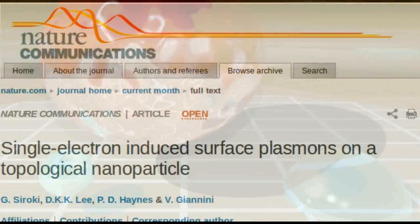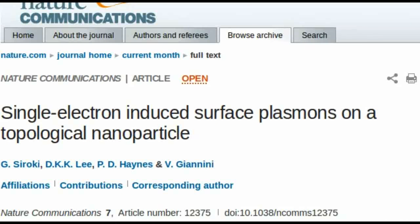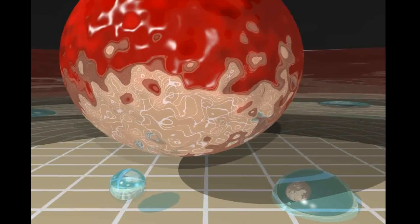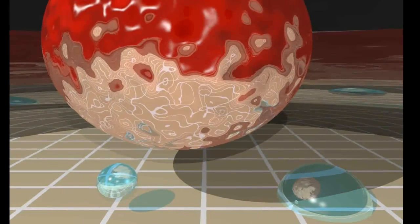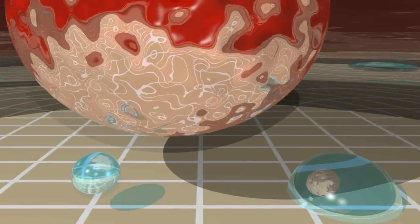In the study published in Nature Communications, the researchers modeled these interactions around a nanoparticle made of a topological insulator. Their models showed that, as well as the light taking the property of the electron and circulating the particle, the electron would also take on some of the properties of the light.